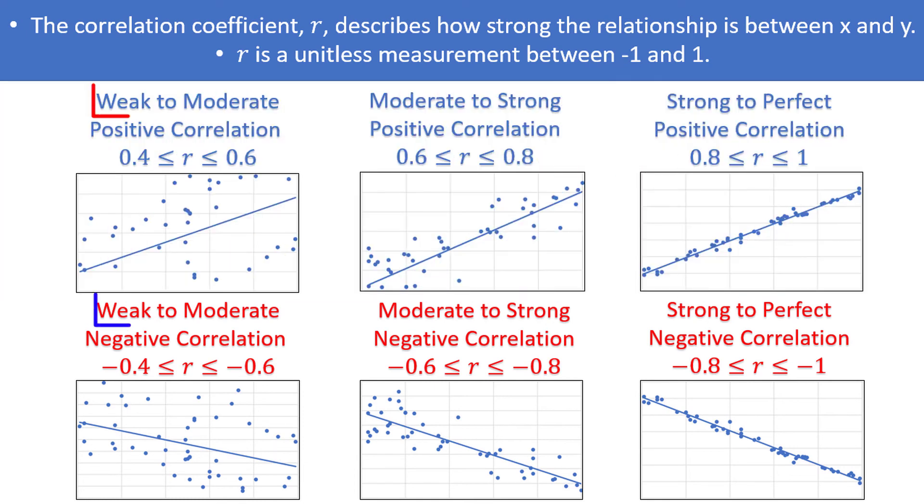Note that the labels weak, moderate, and strong are slightly subjective, and there's no agreed upon standard of what exact values for r should classify the relationship into each of these categories.